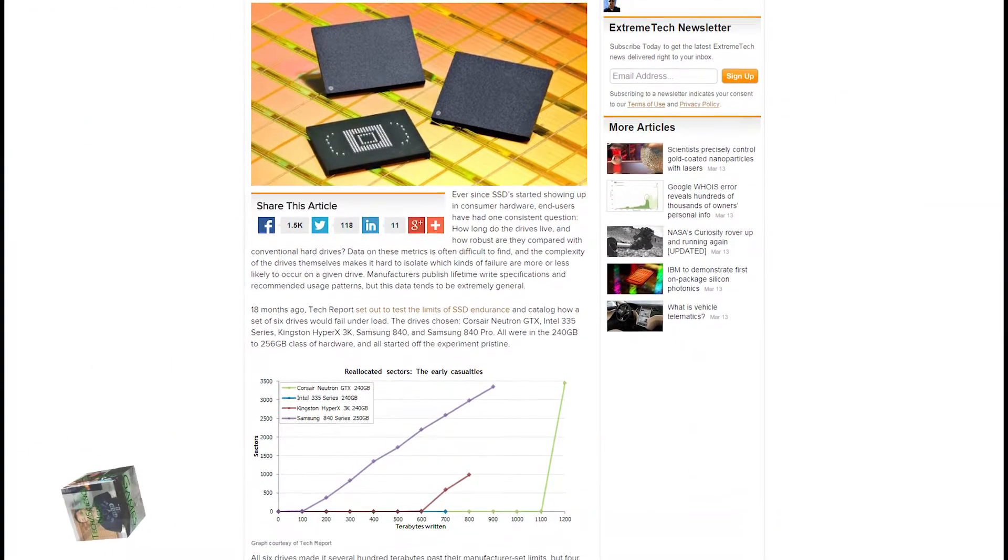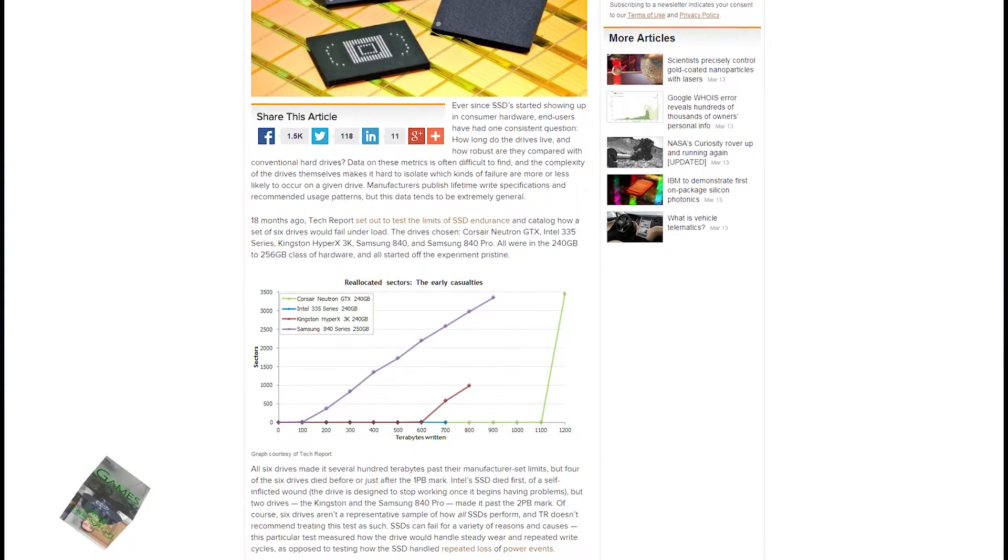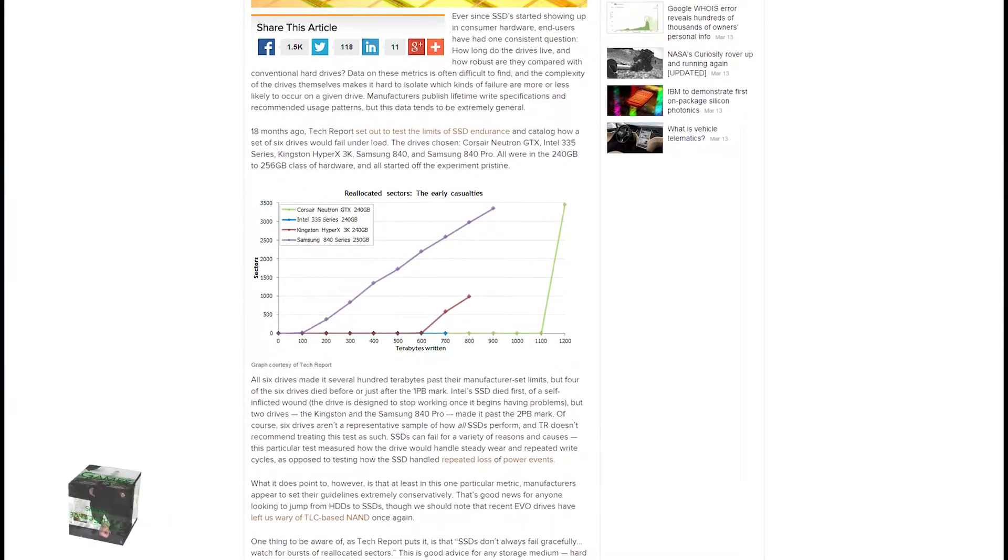Do you have an SSD that you're worrying about giving out because you heard that for every write cycle, the memory degrades just a little bit? Well, you're right, it will fail, but a new experiment shed some light on just how reliable they can be. Surprisingly, Samsung started showing signs of wear way early compared to everybody else, while Corsair lasted the longest. We're talking like 1.1 petabytes worth of data written before things started to go wrong.